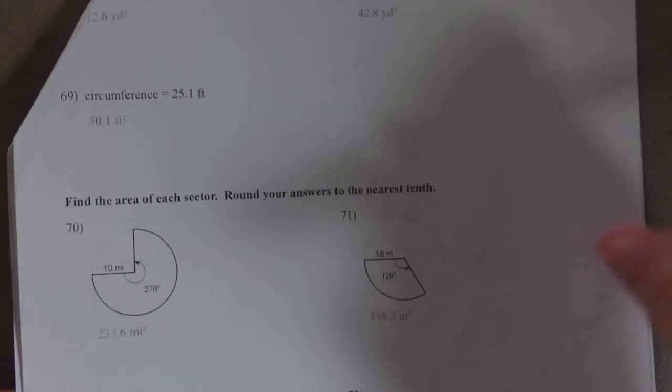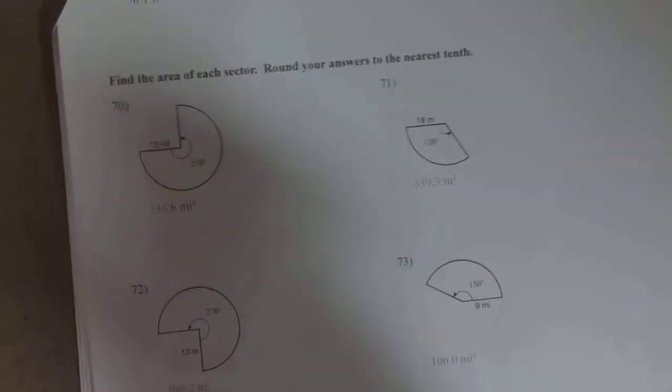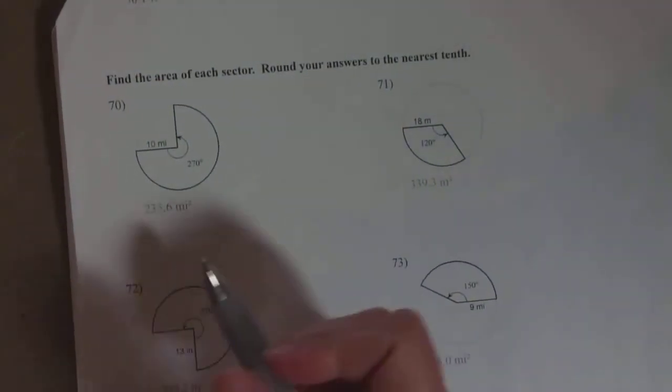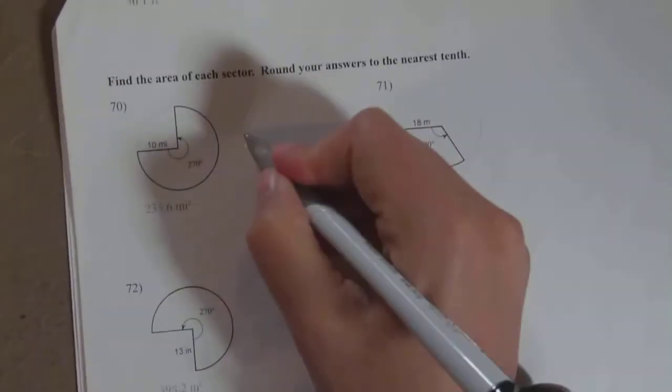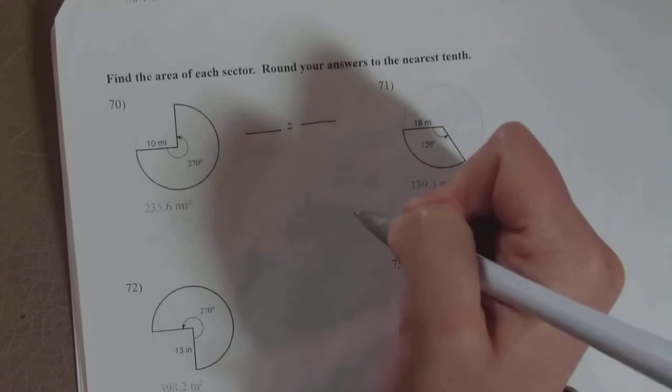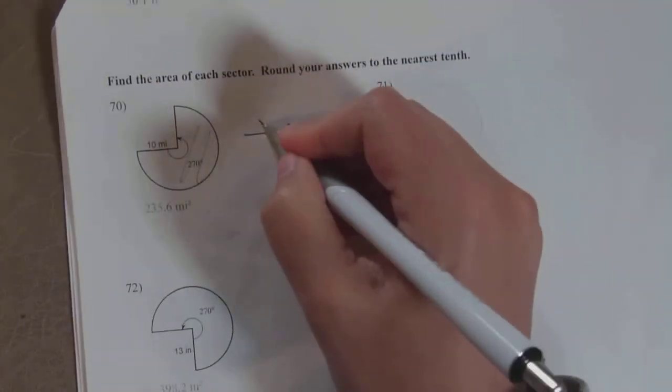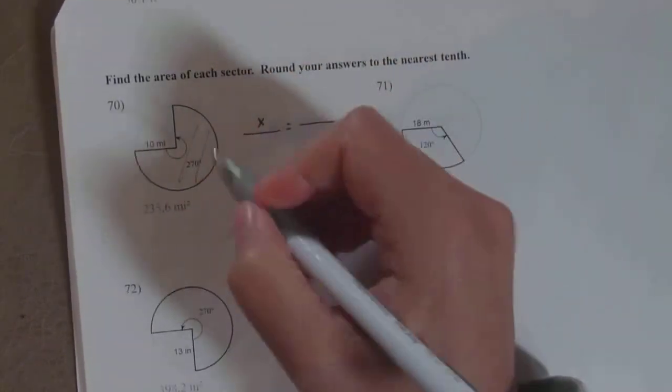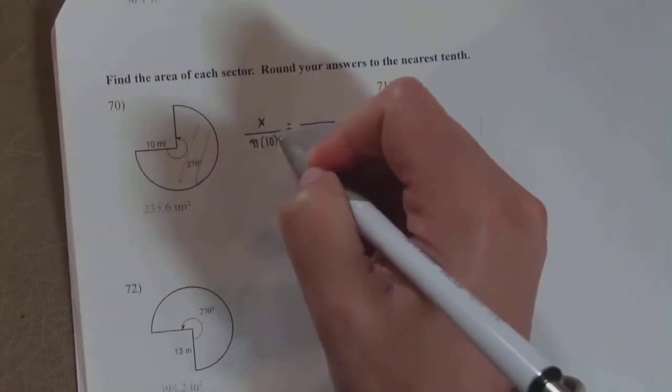Now I want to do a problem on the back about sectors. I did an example in the circle notes, but I'll just do one of these as well. Remember, it's just a proportion that you're setting up to solve for the area of the sector. Your formula is the area of the sector, or your x because that's what you're solving for, over the area of the whole circle. This would be π, the radius is 10, so π times 10 squared.